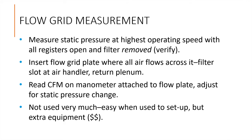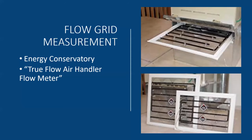The flow grid measurement uses the TrueFlow air handler flow plate from the Energy Conservatory. First, measure the static pressure of the system running without a filter. Then insert the flow plate into your filter slot, and with the system running, the flow plate can send a pretty accurate reading to your manometer. With some quick static pressure calculations, you get a total system airflow number. This method is easy to use, but the flow plate equipment is expensive and not often used in the field. The flow meter has multiple options for size and even add-on pieces to fit whatever filter size slot you might have. There are two or three inch holes in the plexiglass, and the black tubing has many small holes — the pressure created in the black tube is used to extrapolate total airflow moving through the meter.